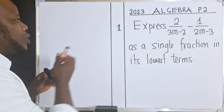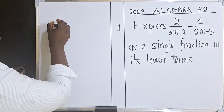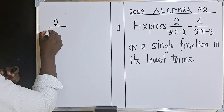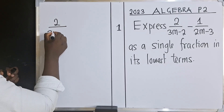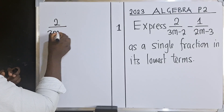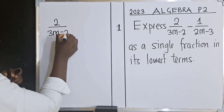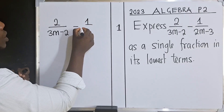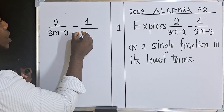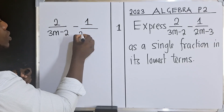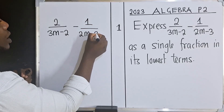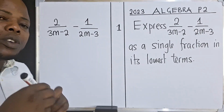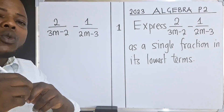So what you're going to do here is to copy. We have 2, then 3, m minus 2, minus 1 over 2m minus 3. That's the first thing. You copy.